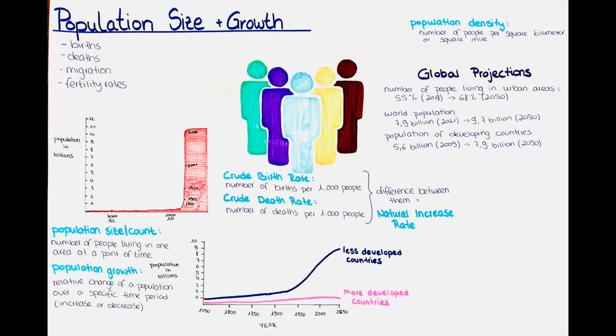Another method is to estimate the time period required to gain a certain amount of people or how long it would take a country to double its population. One of the most commonly used measures of population growth or decline is the crude birth rate, which is the number of births per 1,000 people in a population in a given year. Another measure is the crude death rate, which is the number of deaths per 1,000 people in a population in a given year. The difference between crude birth rate and crude death rate is referred to as the natural increase rate. This rate is also called natural population change.